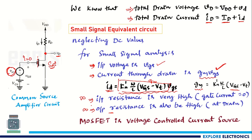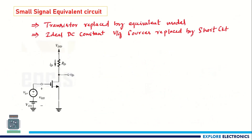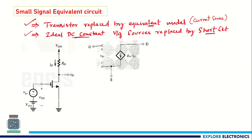By considering input resistance and output resistance as infinite for small signal analysis, we can say this MOSFET is a voltage-controlled current source. We apply V_GS and control the output current I_D. When writing the small signal equivalent circuit, the transistor is replaced by a current source model, and ideal DC constant voltage sources are replaced by short circuits.